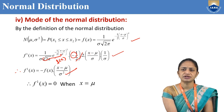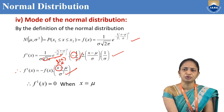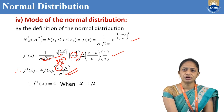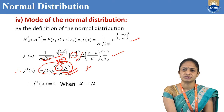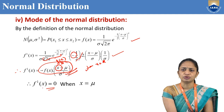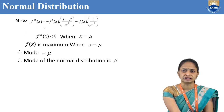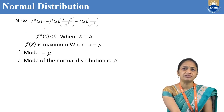Therefore, F'(x) = 0 when x = μ. If I substitute x = μ, that will be μ − μ = 0, so 0 divided by anything is 0, and 0 times anything is 0. That's why the total term is 0 when x = μ. Therefore, F'(x) = 0 when x = μ.